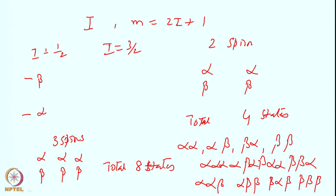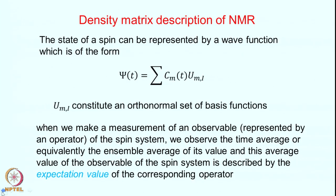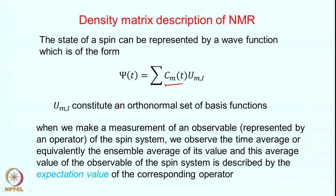We represent the generalized wave function as a superposition of these individual eigenstates. These eigenstates are not time dependent — they are stationary states. But the wave function itself evolves with time. Therefore, we represent ψ(t) as a superposition of states where the coefficients C_m(t) are time dependent.